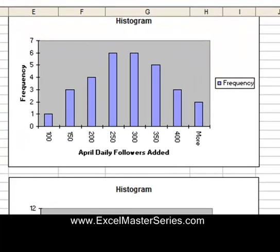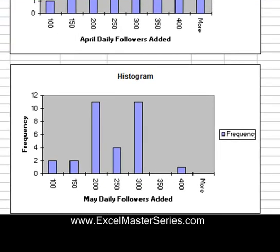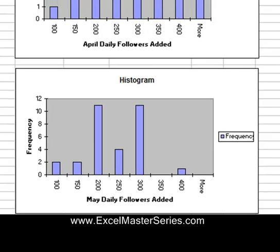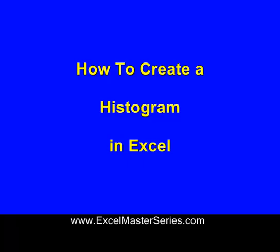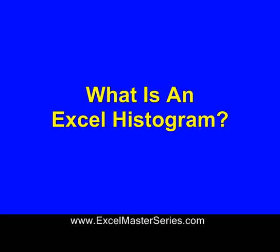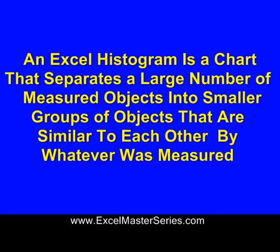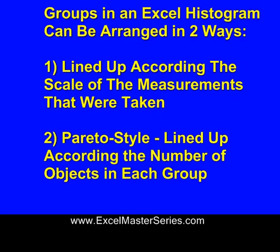Before we show you how to use the XL Histogram to analyze your Twitter campaign, you need to know what a Histogram is and how to make one in Excel. An Excel Histogram is a chart that separates a large number of measured objects into smaller groups that are similar to each other by whatever was measured. Groups in an Excel Histogram can be arranged two ways: lined up according to the size of the objects in the group, or lined up Pareto style — according to the number of objects in each group.